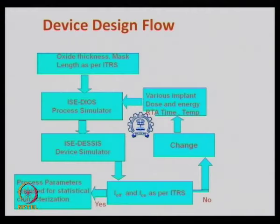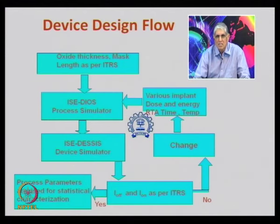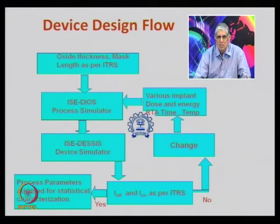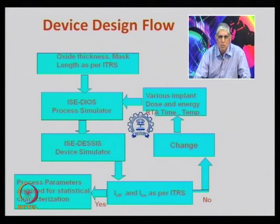At IIT Bombay, a device design flow illustrates the TCAD tools used. To design a MOSFET for a given technology node from the ITRS, one first determines oxide thickness and feature sizes. A process simulator called DIOS-IIC is used, requiring inputs like implant doses and energies, rapid thermal anneal (RTA) times and temperatures. There are at least 450 process steps when making a chip, and for each you must provide exact data. The process simulator then predicts device performance.